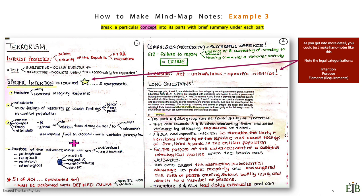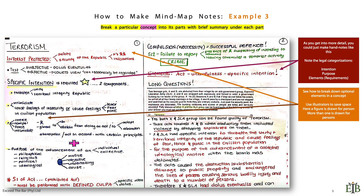And of course, note the legal categorization she used here: the intention, purpose, elements or requirements. I can't stress this enough, guys. These are always asked in questions. See how to break down your optional elements in a concept. Use your illustrators to save space. Here, a figure is drawn for a person, more than one figure is drawn for the plural of persons.